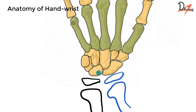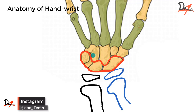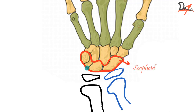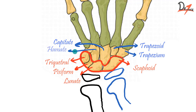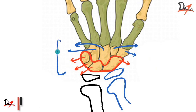The proximal bones are more towards you compared to the distal ones. In the proximal row we have the scaphoid, the lunate, the pisiform, and the triquetral. In the distal row we have the trapezium, the trapezoid, the capitate, and the hamate. Here you can see a little hook, and that is called the hook of hamate.